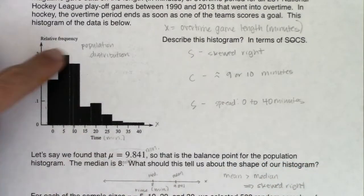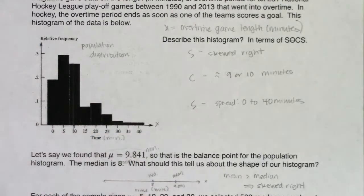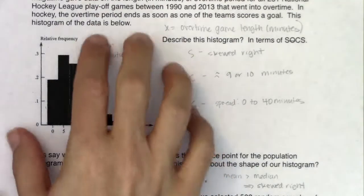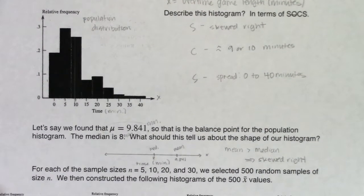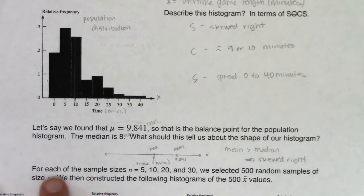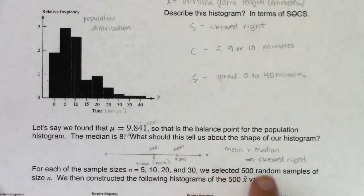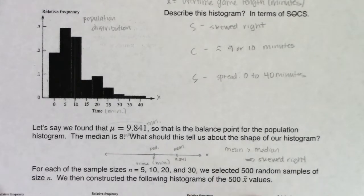We're seeing that in the shape, but I also want you to see it in the statistics, so we can remember what the numbers tell us. From our population, I'm going to do the same thing I did with the platelet sizes from example one. For each of the following sample sizes — 5, 10, 20, and 30 — we're going to select 500 samples of size n and then make our own sampling distributions.